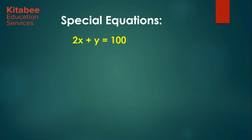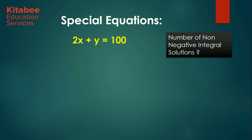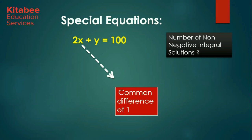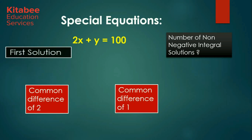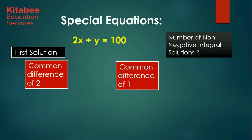Let us take one more example: 2x plus y equal to 100. We are supposed to find out the number of non-negative integral solutions. The coefficient of x is 2 and the coefficient of y is 1. So the values of x would be in arithmetic progression with a common difference of 1, and the values of y at a common difference of 2. If we put x equal to 0, then y comes out to be 100, so the first solution is 0, 100.